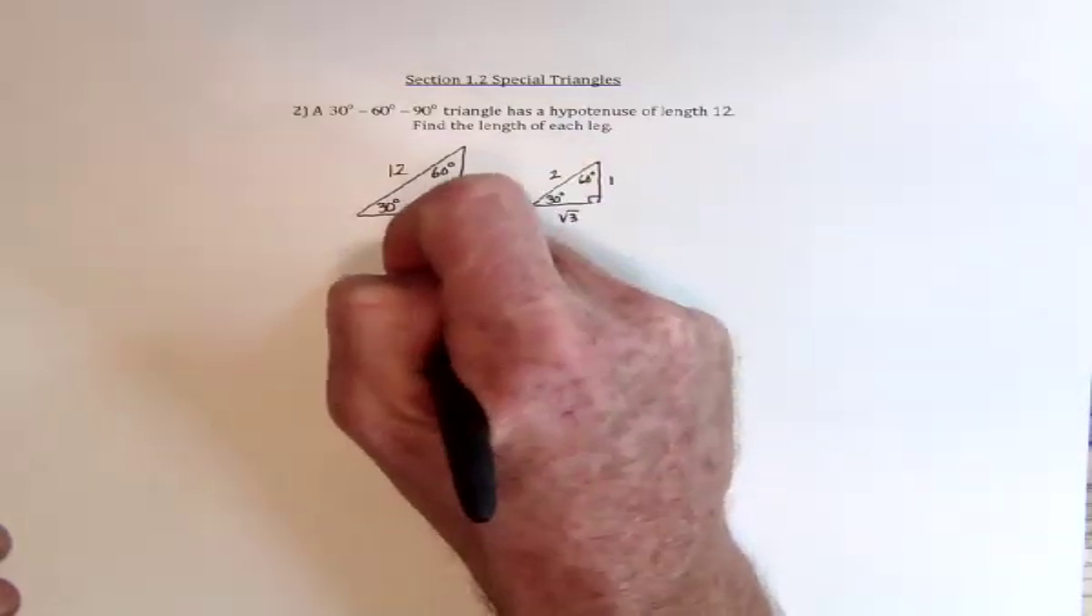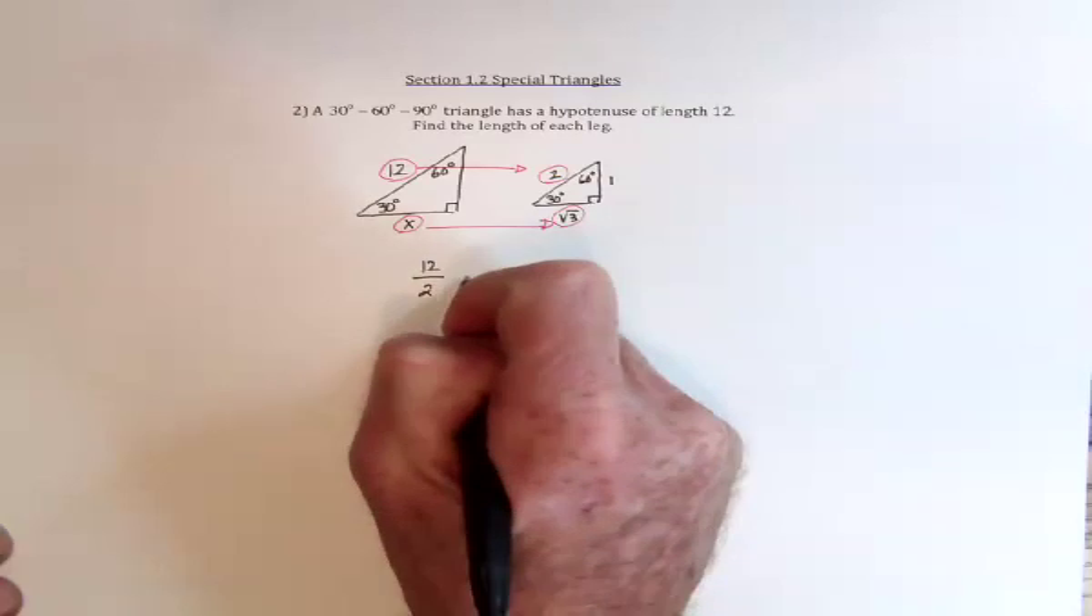If it's not that easy to see, sometimes what you can do is set up proportions. So compare the hypotenuse to the hypotenuse, and then compare the side that's across from 60 to the side that's across from 60. And so we'd have 12 compared to 2 is the same as x compared to square root of 3.